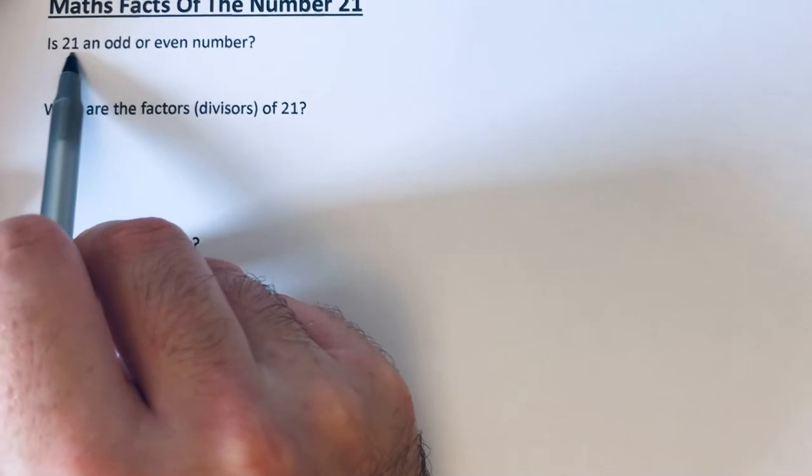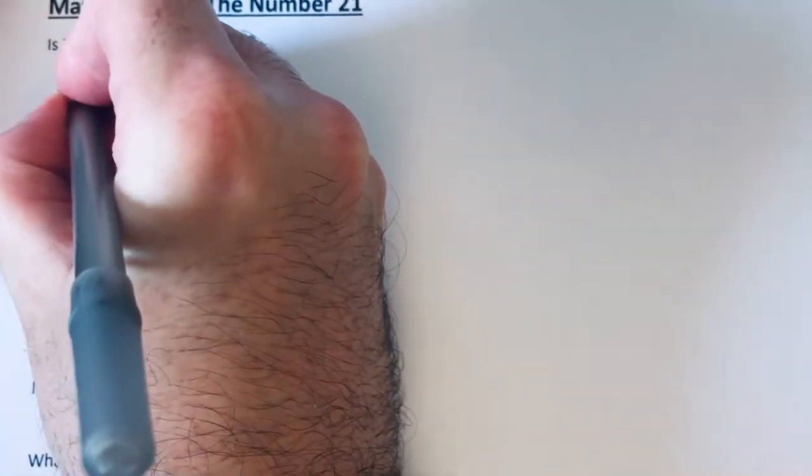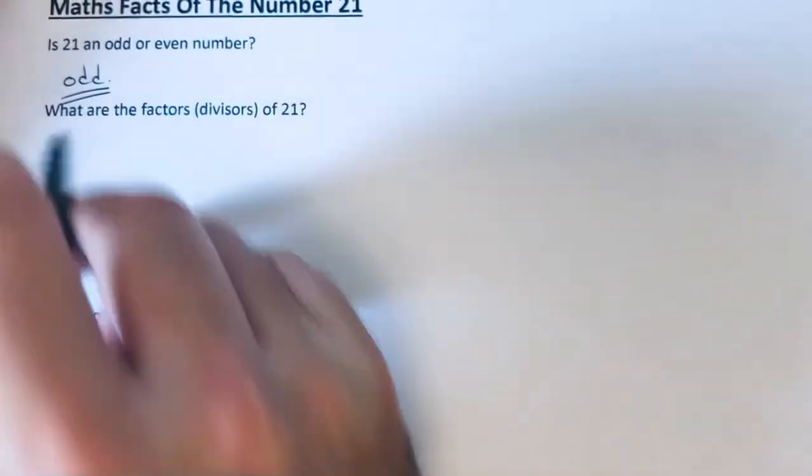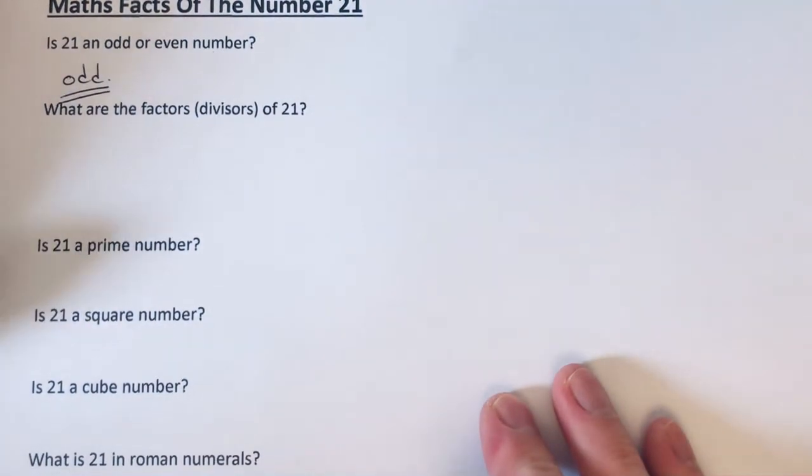The first question: is 21 an odd or an even number? Well, 21 is an odd number because it's not in the 2 times table.